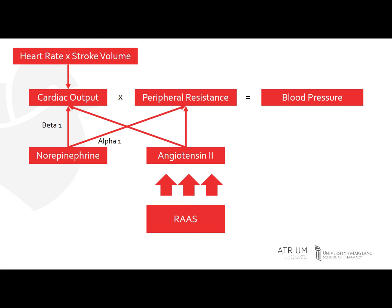The other main pathway to consider is the neurohormonal pathway. One of the main neural mechanisms involves the sympathetic nervous system. What happens is there is an increased production of norepinephrine, which has an effect on both the beta-1 and alpha-1 receptors.